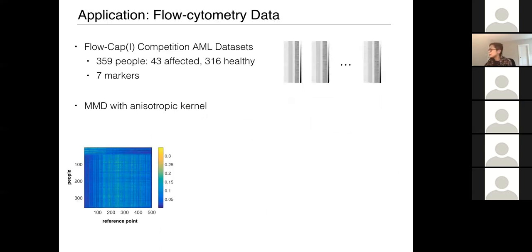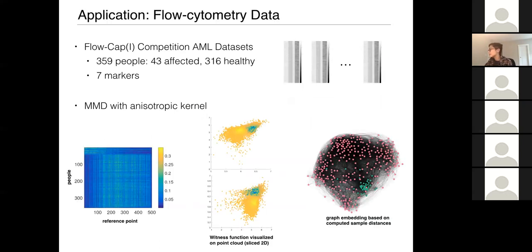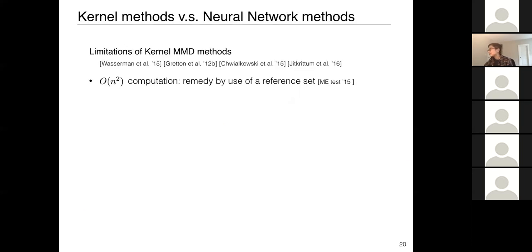The flow cytometry application on biological data uses the anisotropic kernel to discriminate two patient conditions, doing better than the isotropic kernel.